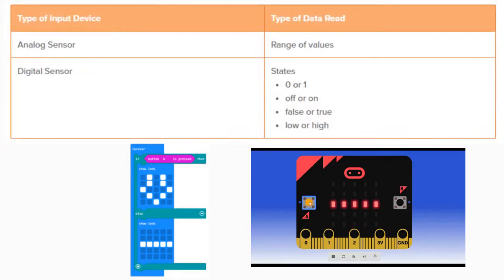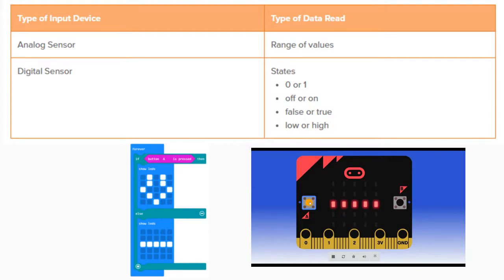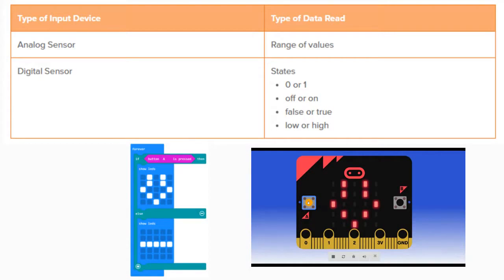Analog sensors send varying values to your micro:bit. The value can depend on the amount of bend in a flex sensor, the amount of pressure you put on a pressure sensor, or the amount of light detected by a photoresistor. Analog sensors have a range of values from zero to 1023. For digital sensors, the data is either a zero or a one — in binary this means on or off, true or false, or high or low.